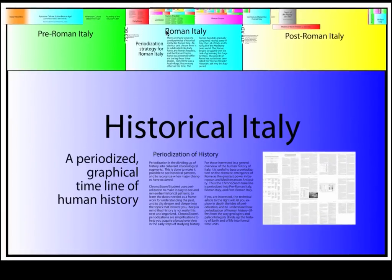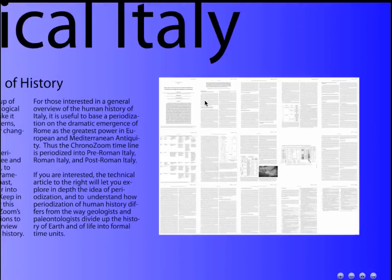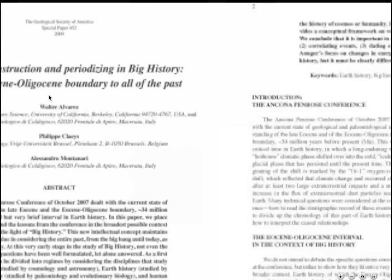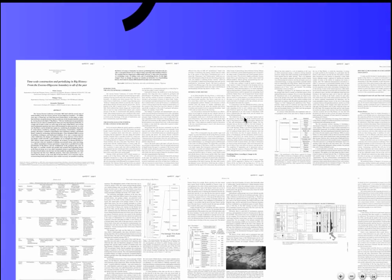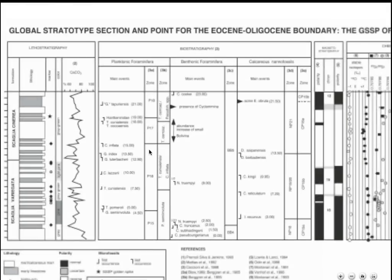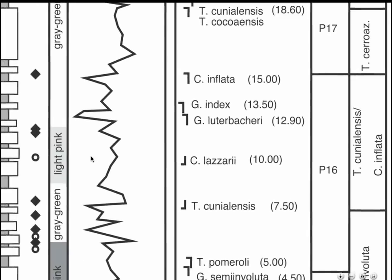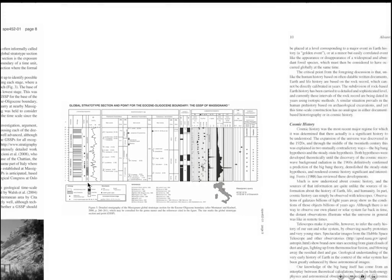Another fun thing we can do is we can embed papers. So if we look down here, we've got a paper talking about periodization of history. This is an entire PDF and any part of it you can zoom into, and you can do so without any delay of having to scroll tediously through a PDF. One of the great benefits is that figures remain sharp but are also very quickly and easily browsed, more so than using a standard PDF reader.